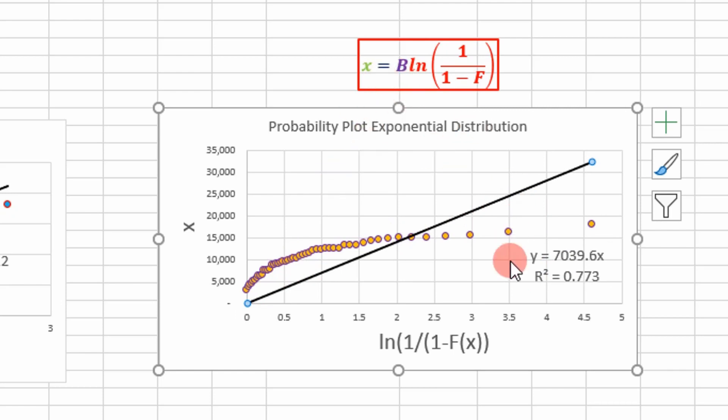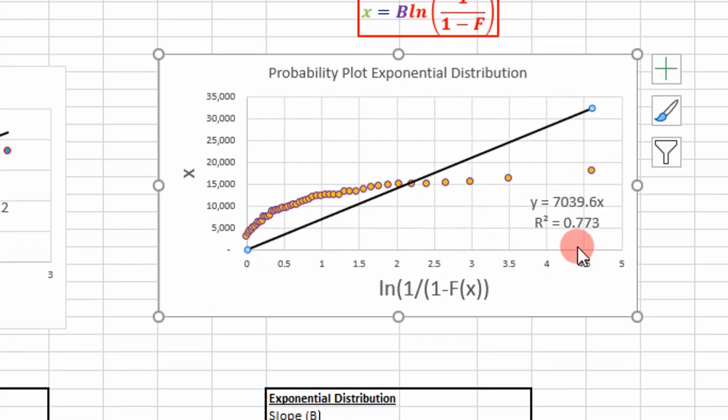We have the equation of this line right here, so our b value is 7039.6 and our R squared value is very low. It's a poor fit, but that's how you do this process.